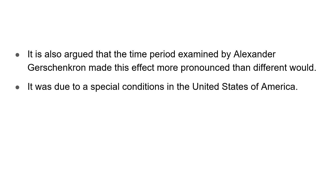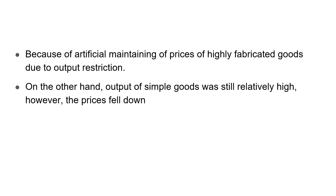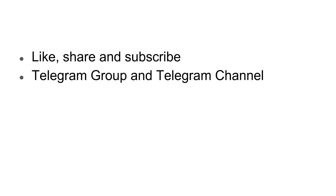There are also arguments related to the time period when Alexander Gerschenkron made his effect more pronounced. This was due to special conditions in the United States — for example, during the Second World War period around 1939. The effect of growth was actually reversed due to depressions, with artificial price maintenance of highly fabricated goods due to output restrictions, while prices of certain simple goods fell significantly.